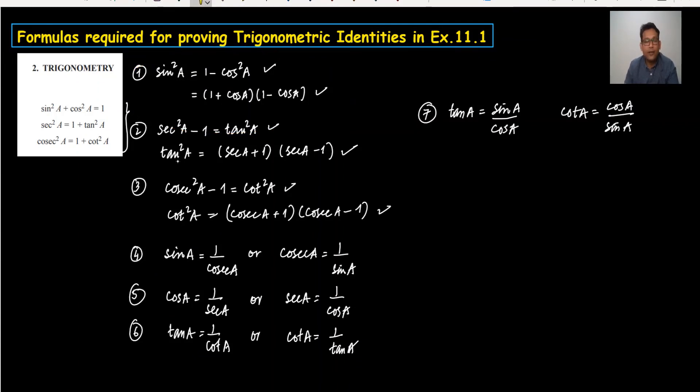So when you want to start trigonometrical identities from chapter 11.1 or even from the past papers, you just need these formulas. These formulas are enough to prove the trigonometrical identities. I think these are very important formulas to remember and practice.